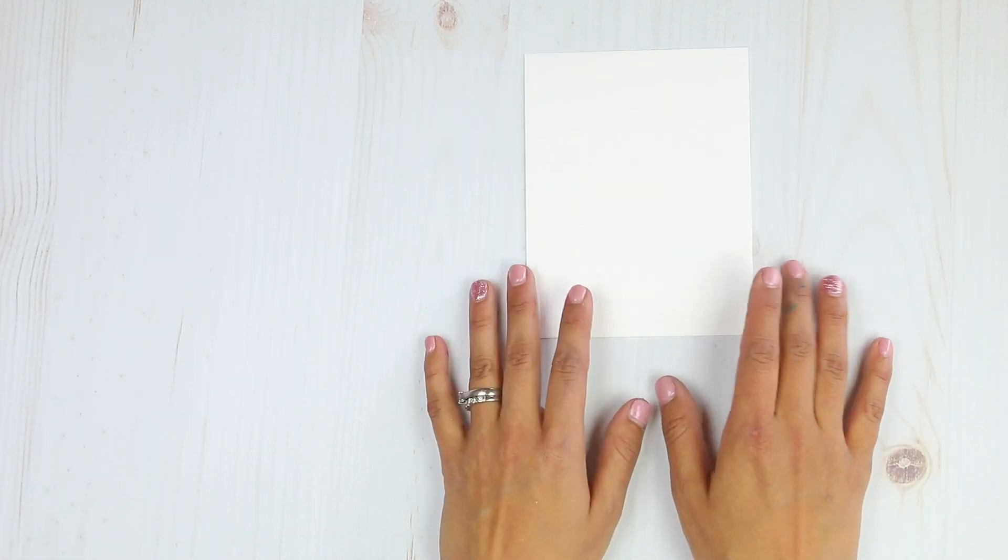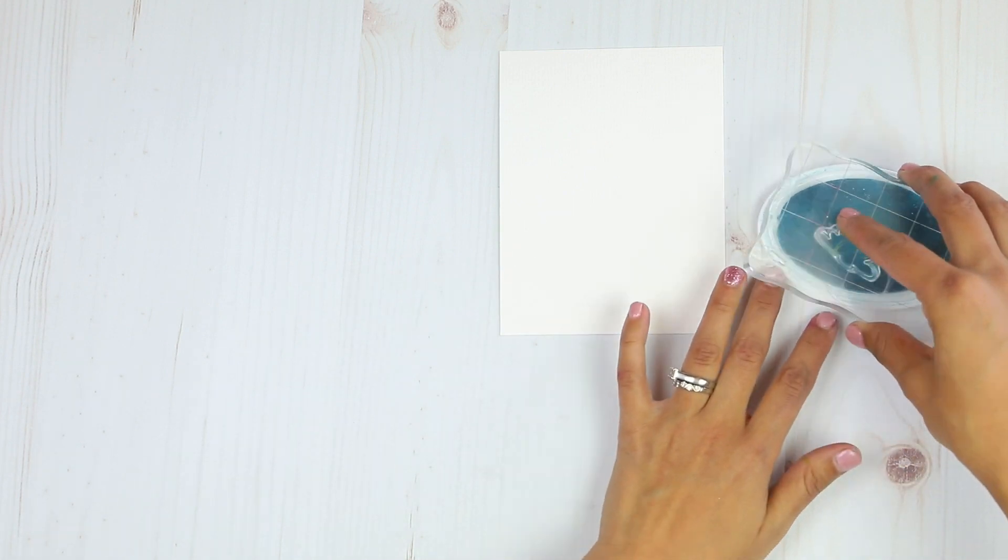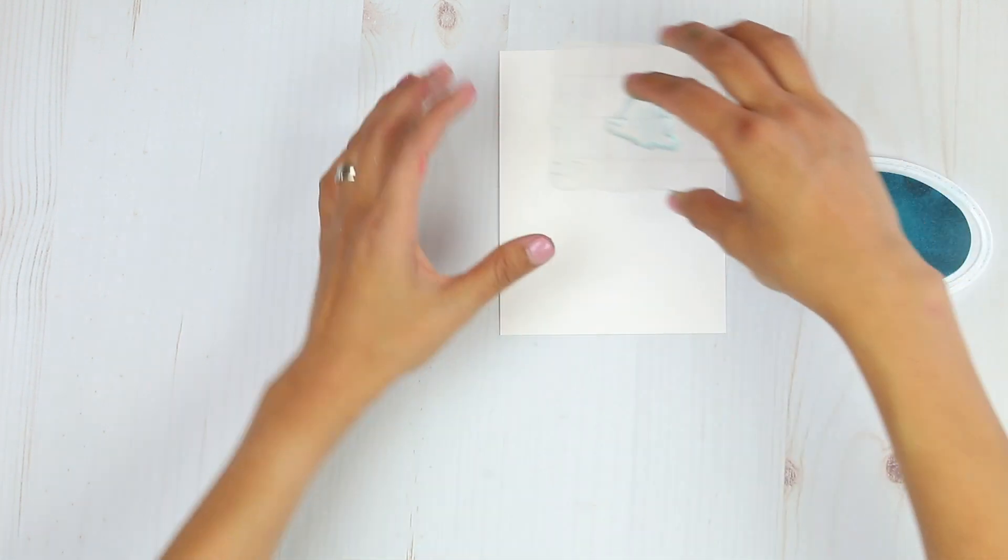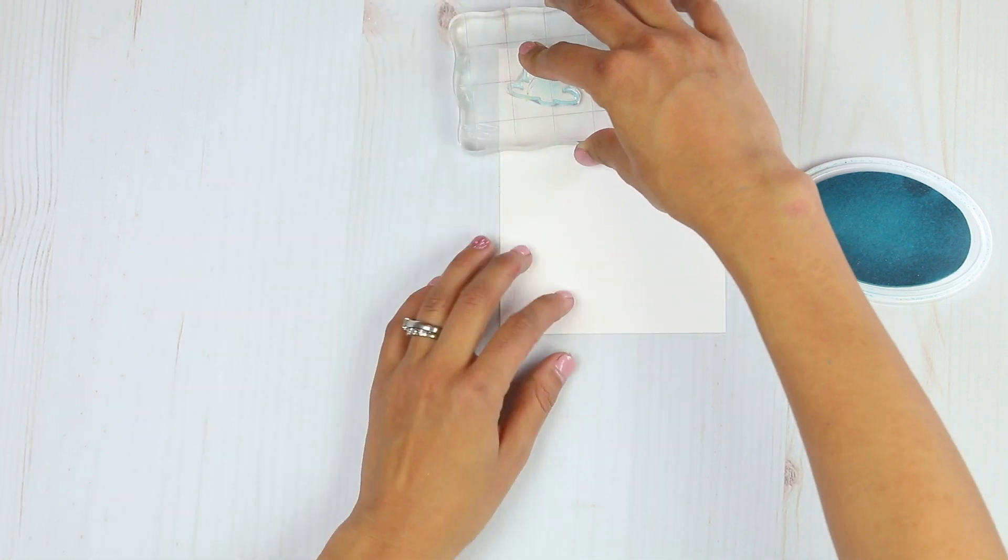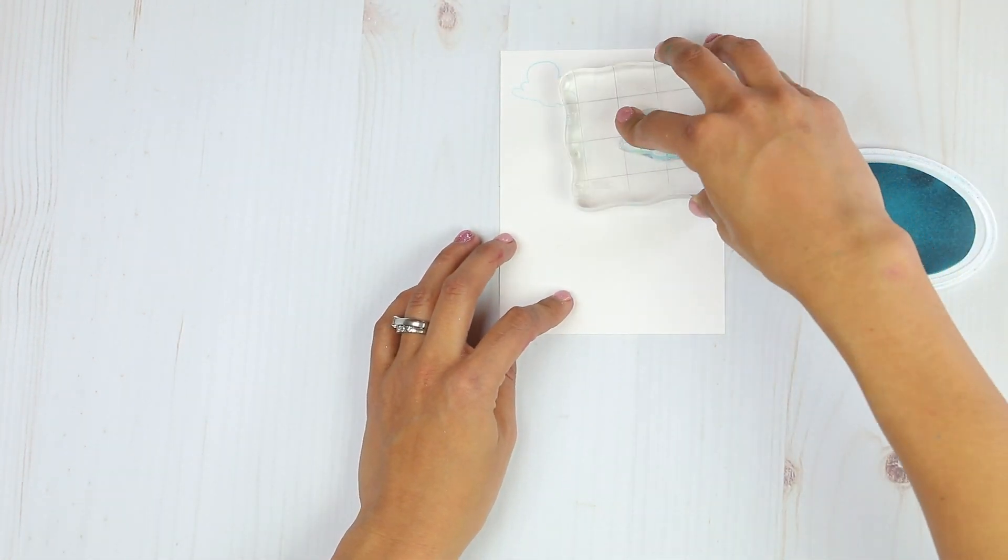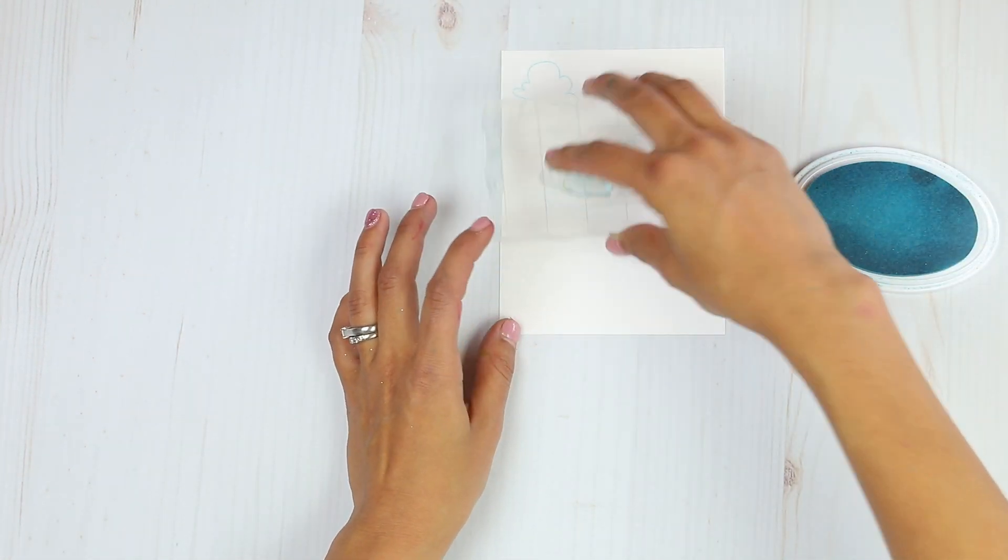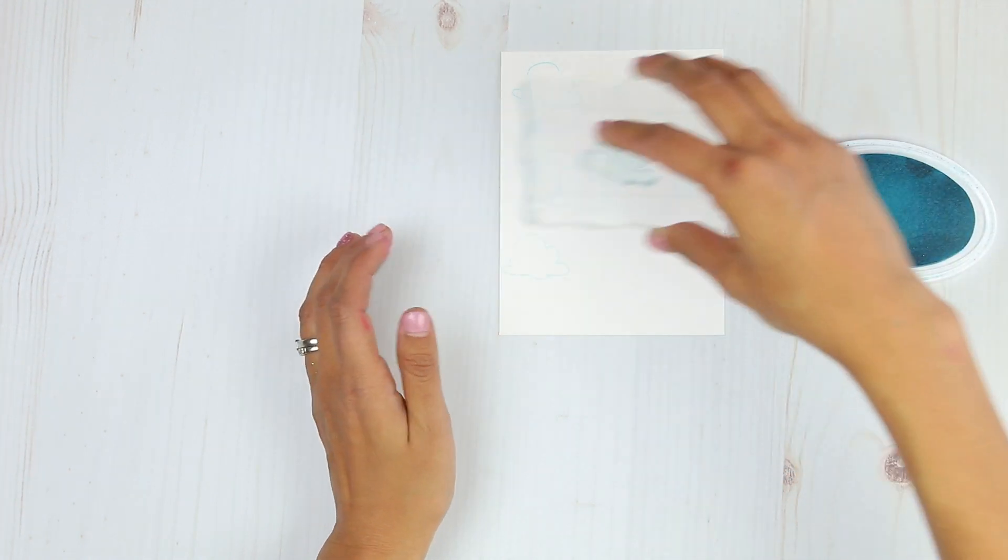We're going to begin on a piece of watercolor card. So this has been cut 4¼ by 5½. Then I'm going to bring in my ink. I'm using It's a Boy from Catherine Pooler Designs. You can use whatever ink color you like. So I'm going to begin by stamping my clouds in this lovely blue shade.